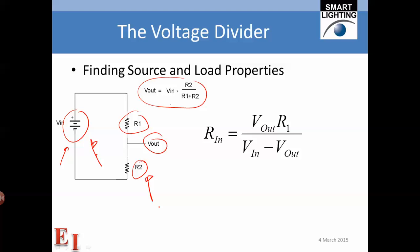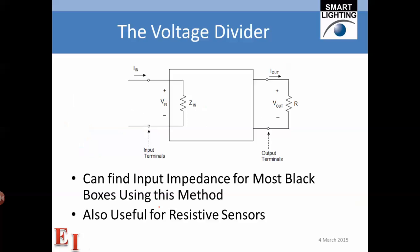So we use voltage dividers to set up a measurement configuration that allows us to determine either the internal resistance of a battery or the input impedance of a measurement device like a voltmeter or an oscilloscope. We can take this one step further and find the input impedance of most black boxes using this method.